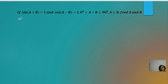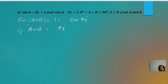Beginning with the first question: sin(A+B) = 1. This implies sin(A+B) = sin 90°, so A+B = 90°. Please do not cancel sine from both sides, because sin(A+B) does not mean a product of sine and (A+B) — sin 90° is not a product either. So we conclude A+B = 90°.